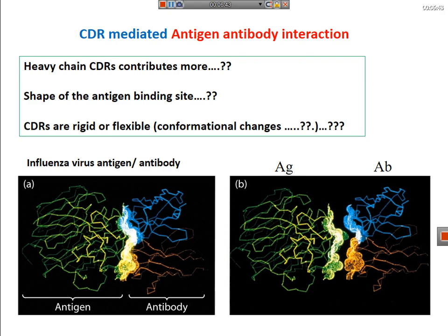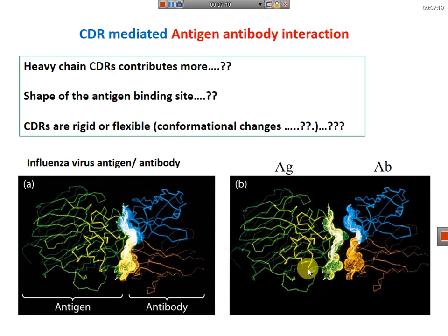Antigen-antibody interactions are just like enzyme-substrate interactions — they involve induced fit into each other. There are conformational changes once the antigen binds to the antibody, as shown in this figure. You can see the antigen binding to the antibody and the conformational changes that occur. As separate molecules and once they interact, there are subtle changes in the conformation of the polypeptide chain.